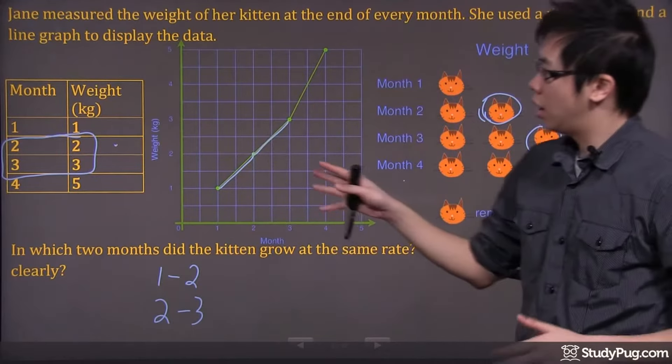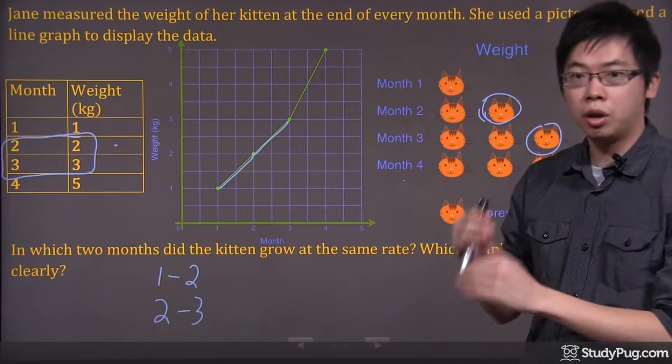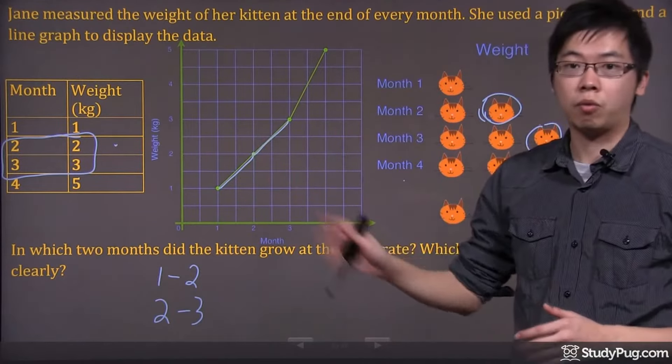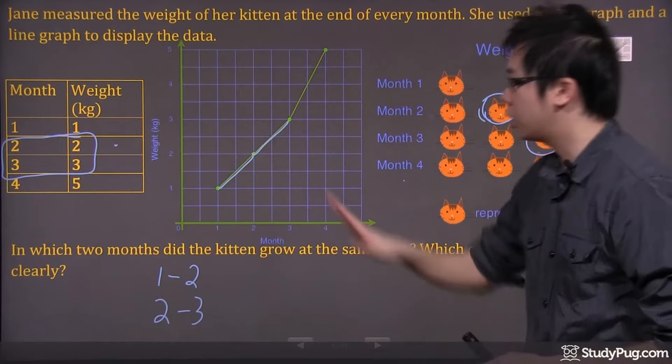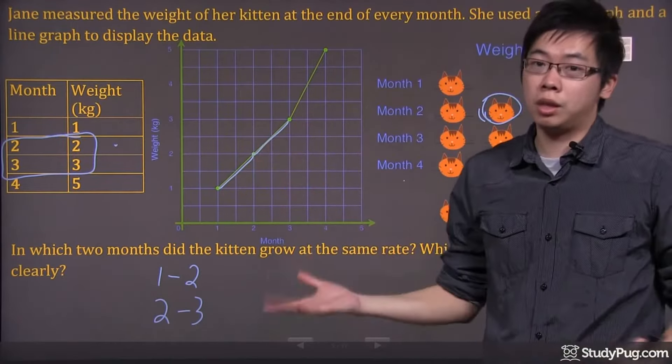Simply because the line graph, as long as you have the same constant growth, the steepness of the graph will appear to be the same. When I look at the line graph, clearly I can see that there's two intervals that have the same steepness.